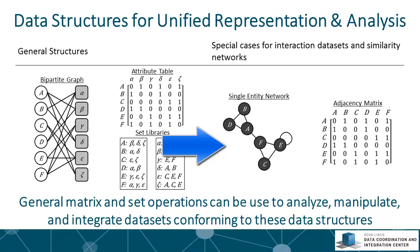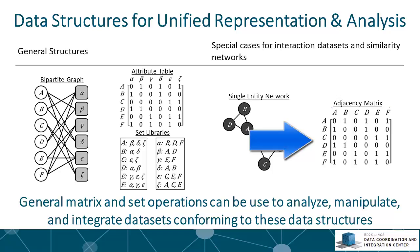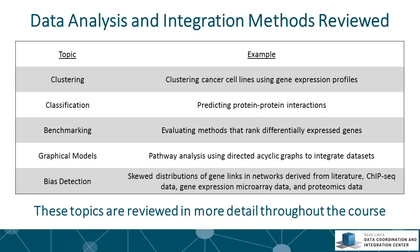The attributes can also be connected to form attribute-attribute networks — for example, a network of disease terms. An adjacency matrix is a representation of a network using a matrix. General matrix and set operations can be used to analyze, manipulate, and integrate data sets conforming to these data structures. Data analysis and integration methods applied to these structures include clustering, classification or machine learning, benchmarking, graphical models, and bias detection.